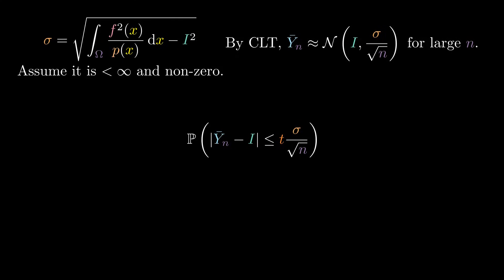So, we want to know the probability that the error is less than some constant t, multiplied by the standard deviation of the normal. Using the properties of the absolute value, we can express the probability equivalently like this. Next, divide by sigma over the square root of n in the inner inequality.